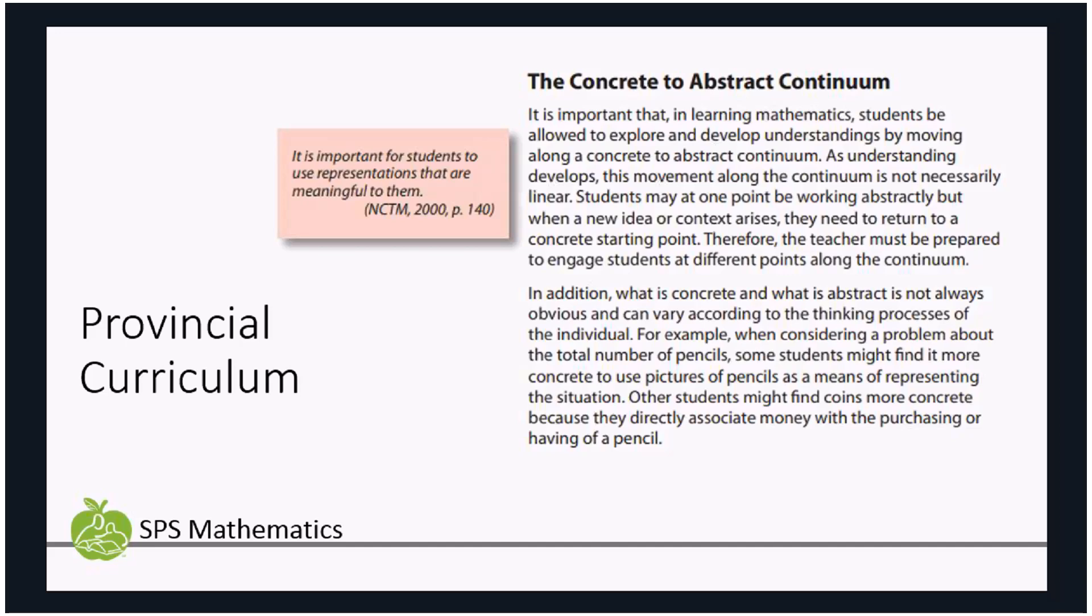We know that human beings really start at a concrete phase and we can see that best with our babies. Babies really need to touch things and taste things and smell things and manipulate things in order to gain an understanding of it. And as they develop and as humans develop, we can move into a more abstract way of thinking about things and making sense of the world around us.